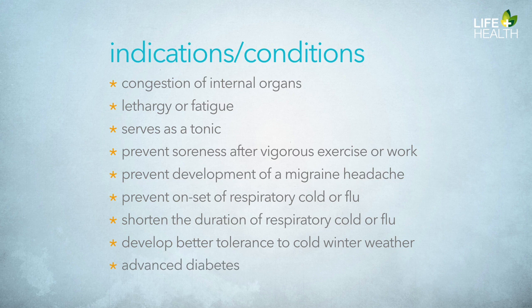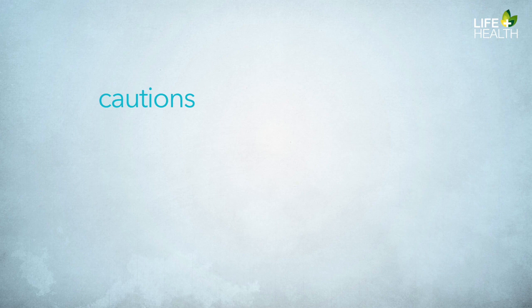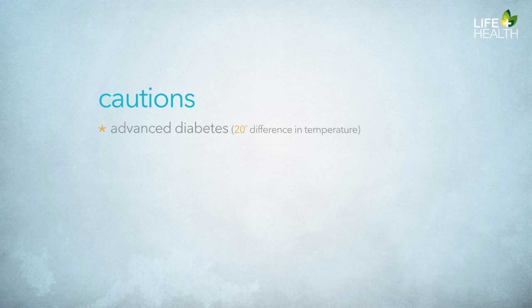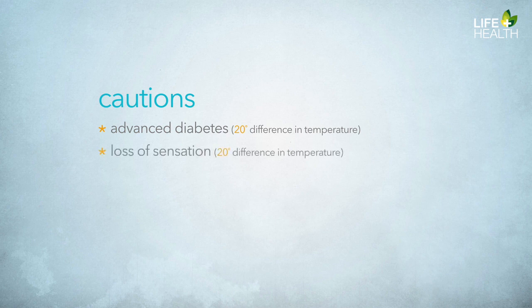Advanced diabetes is listed as a caution for contrast showers. This means you wouldn't use the typical protocol, but back off on the temperature. For advanced diabetes, you only want to use a 20-degree difference in temperature — so if the hot is at 102 degrees, the cold will go down to 82. Loss of sensation also requires the same approach: use only a 20-degree difference in temperature.